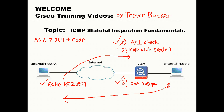On ASA 7 code or higher, the ICMP inspection engine can be enabled by utilizing modular policy framework. I will be making a video going in-depth on the configuration and implementation of this in the near future, but for now I'd like to review what we just went over.